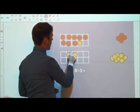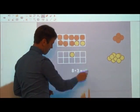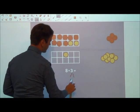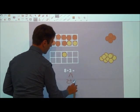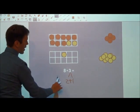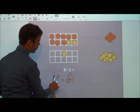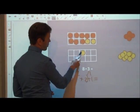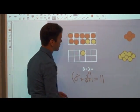So we'll drag our 2 up to make our 10. And we see that 3 is really 2 plus 1. So now we have 8 plus 2 plus 1, or 10 plus 1, which would give us 11.